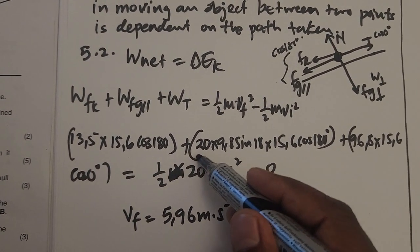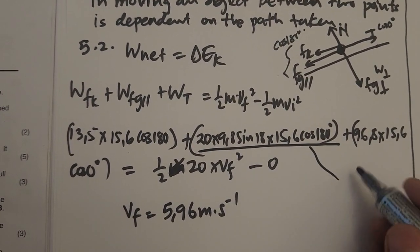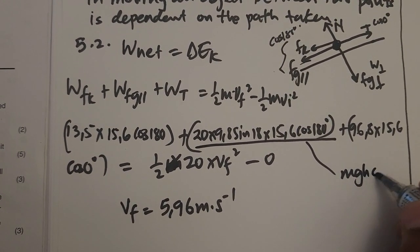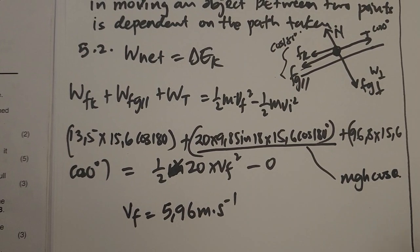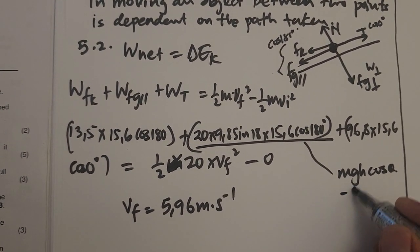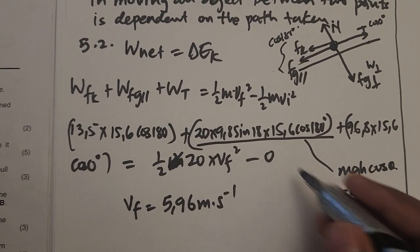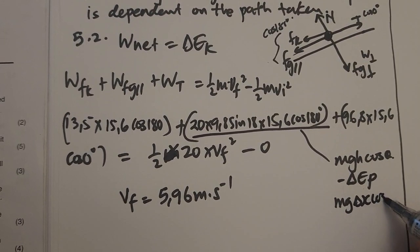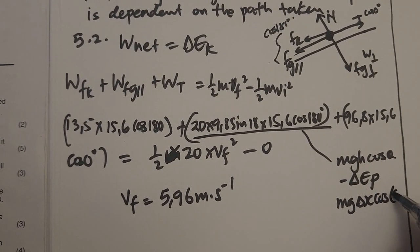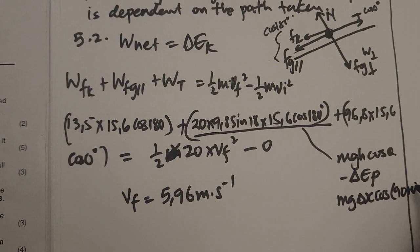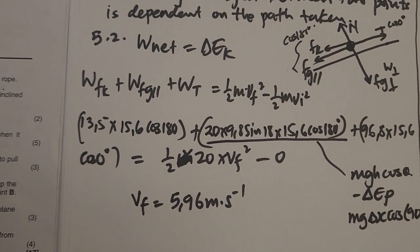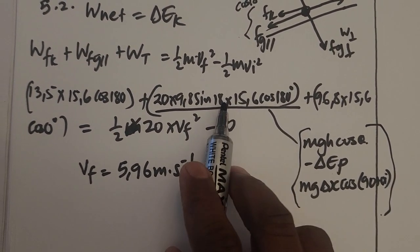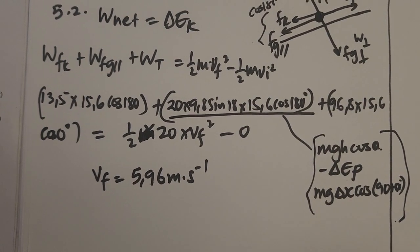Note: the work done by the weight can also be written as mgh·cos(θ), as negative ΔEp, or as mg·Δx·cos(90° + θ) — in this case cos(90° + 18°) since the crate moves up. Any of these approaches will give the same answer.